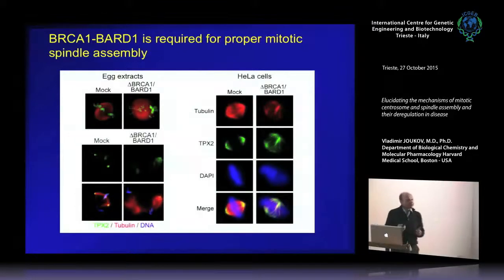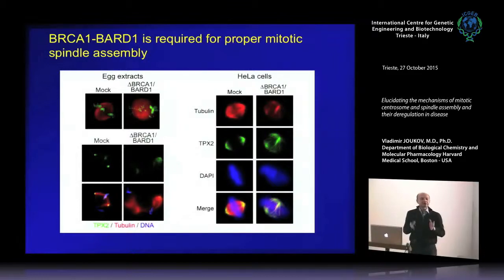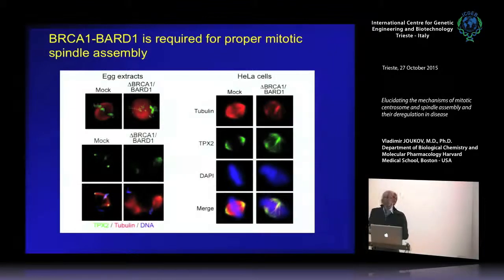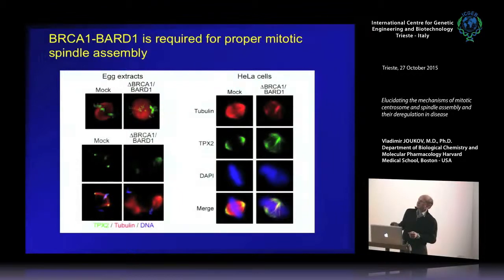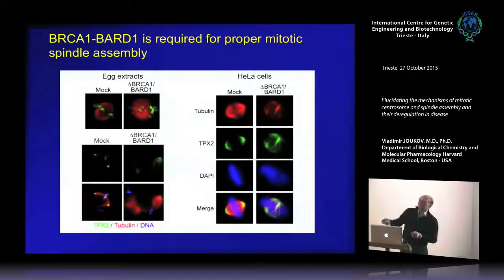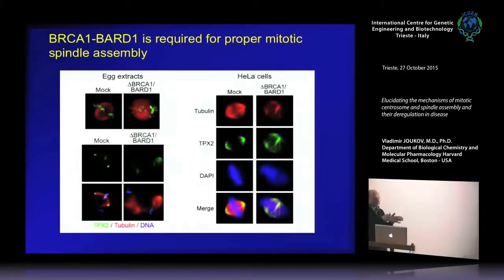What I found is that interestingly, BRCA1/BARD1 was not required for interphase functions such as nuclear envelope assembly or DNA repair. Instead, it was essential for proper mitotic spindle assembly, particularly for focusing of spindle poles and for targeting of TPX2, a microtubule nucleating protein, to spindle poles. In the absence of BRCA1/BARD1, poles are disorganized — TPX2 binds to microtubules but does not form sharp spindle poles. The same phenotype was confirmed in mammalian cells.